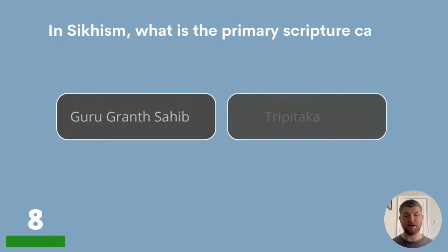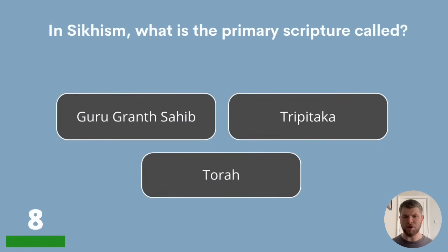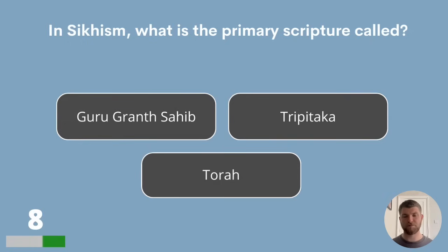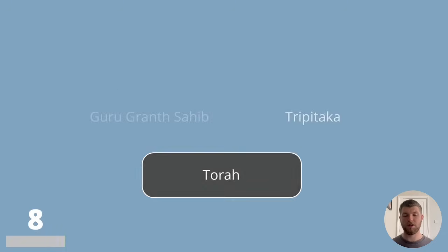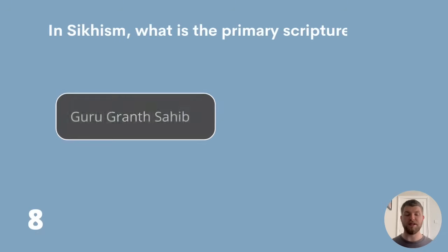Question 8. In Sikhism, what is the primary scripture called? Guru Granth Sahib, Tripitaka or Torah? The answer is Guru Granth Sahib.